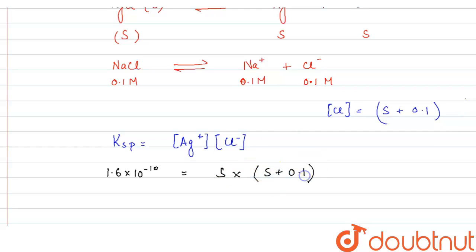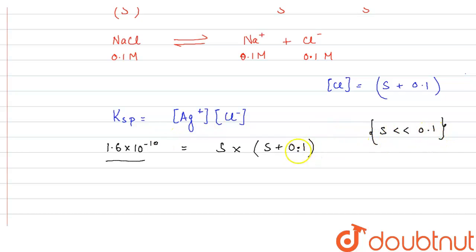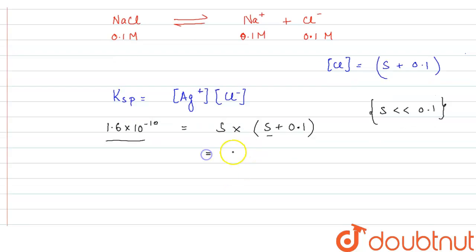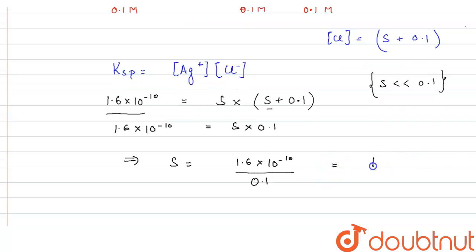As we can see, s will be very very small in comparison to 0.1, because the solubility product value is very less — 10⁻¹⁰. So we can neglect s in comparison to 0.1. This gives us s × 0.1 = 1.6 × 10⁻¹⁰, so s = 1.6 × 10⁻¹⁰ divided by 0.1, which gives s = 1.6 × 10⁻⁹.